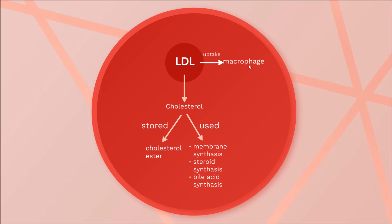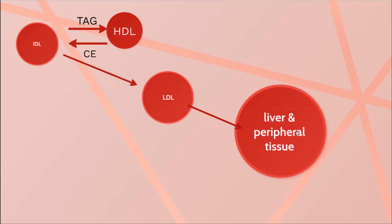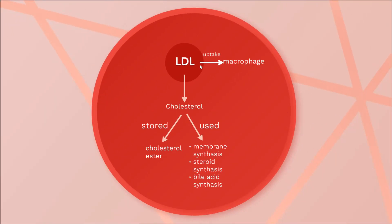To summarize: IDL transforms into LDL by transferring triacylglycerol to HDL in exchange for cholesterol ester. This cholesterol ester-rich LDL is then taken up by the liver and peripheral cells, mediated by LDL receptors. Inside the cell, LDL offloads its cholesterol for various purposes, and the remaining portion is taken up by macrophages.